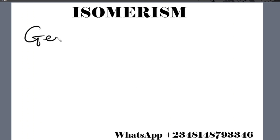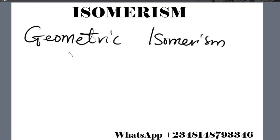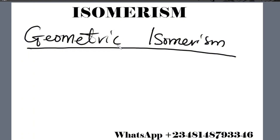Now let's look at geometric isomerism. Geometric isomerism is the existence of two or more hydrocarbons with the same molecular formula but are not identical due to differences in the spatial arrangement of the component atoms. Under geometric isomerism, we have cis and trans.